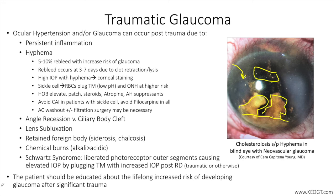Chemical burns, both alkali and acidic, can lead to compromise of the outflow system, and lifetime monitoring of these eyes is necessary to maintain surveillance of IOP and the optic nerve. Alkali exposure tends to cause worse intraocular pathology due to enhanced penetration into the eye, with alkali agents being more lipophilic, compared to acidic exposure, which denatures proteins, creating barriers to further damage in the eye.